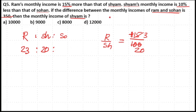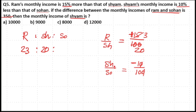Similarly, Shyam's monthly income is 10% less than that of Sohan. 10% less means minus 10, that is minus 1 out of 10. If Sohan's salary is 10, Shyam's salary will be 1 less than 10, that is 9. So Shyam's salary is 9 and Sohan's salary is 10.